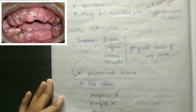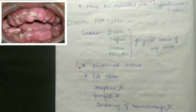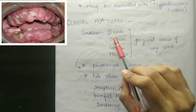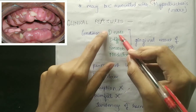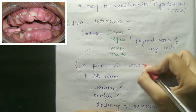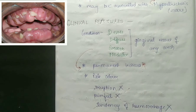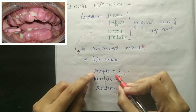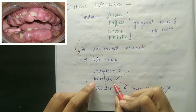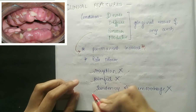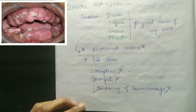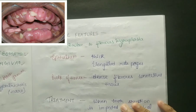Talking about clinical aspects: you can see dense, diffuse, smooth, nodular gingival tissue. The commonly affected teeth are permanent incisors — this is important. The color is pale. Importantly, it is not associated with eruption problems, it is not painful, it is asymptomatic, and there is no tendency of hemorrhage. These three things — eruption, painful, tendency of hemorrhage — are absent.